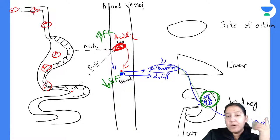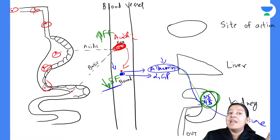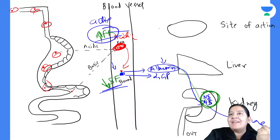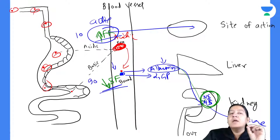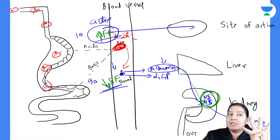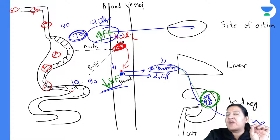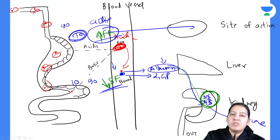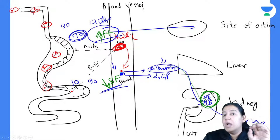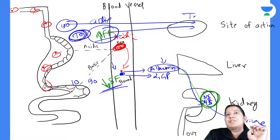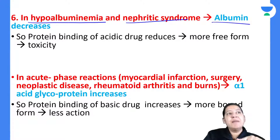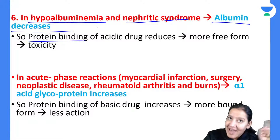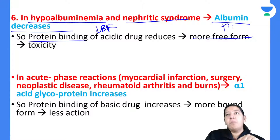If you give any acidic drug, it will obviously have less bound form because albumin is less. Less bound means more free, and more free — the active form — means it will show more mechanism of action. Normally if only 10% was free and 90% was bound, since albumin is absent, now 90% is free. You decided the dose based on 10% free, but the drug will be 90% free and cause toxicity — that is hypoalbuminemia toxicity.